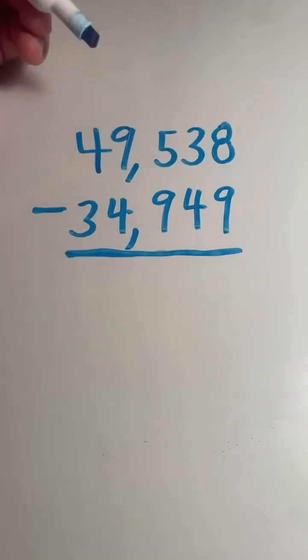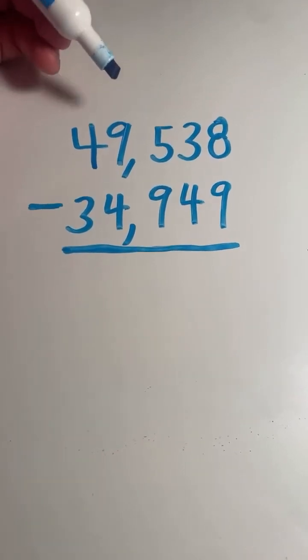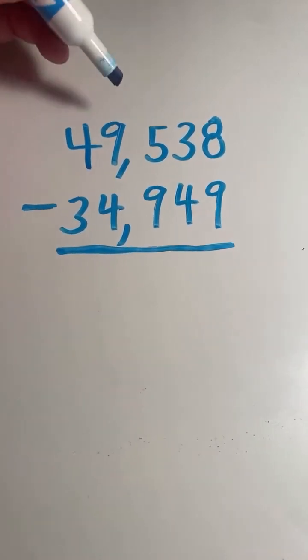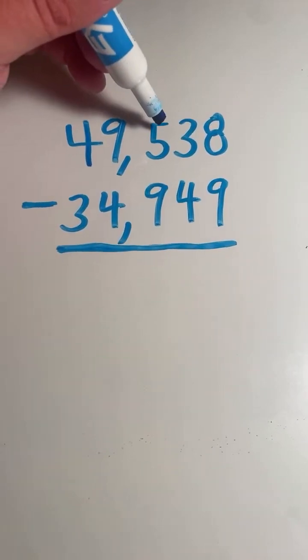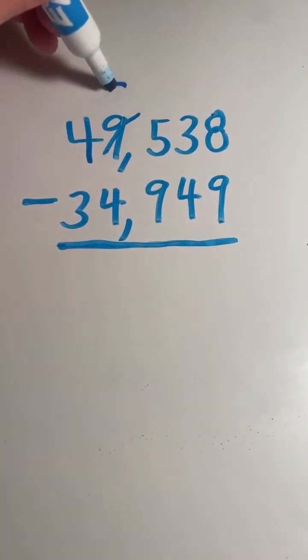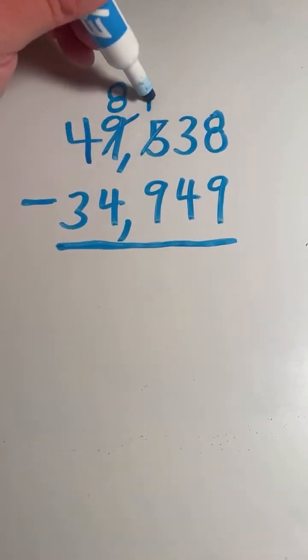All right, so we are going to regroup, going from left to right. So we have to take a 10 from the 1,000s place. This 9 is going to become an 8. This 5 is going to become a 15.